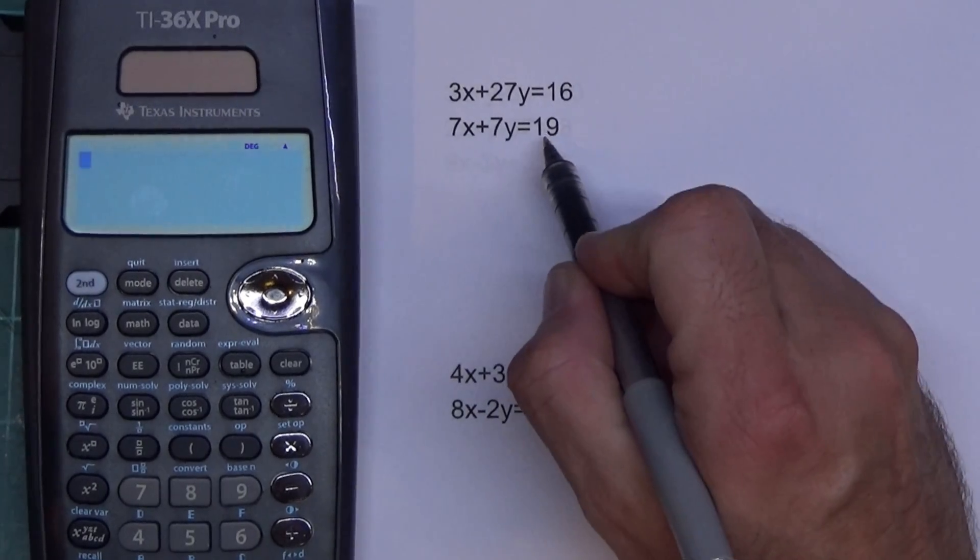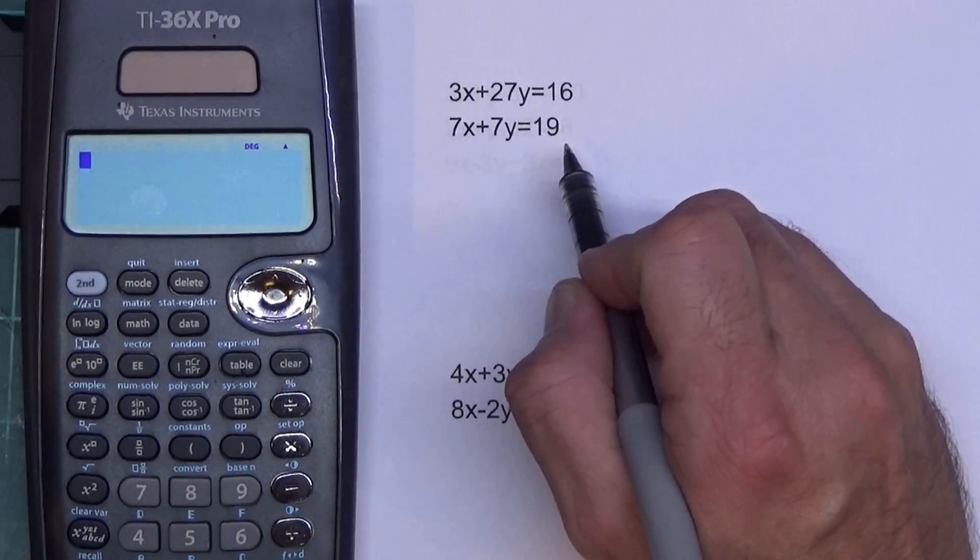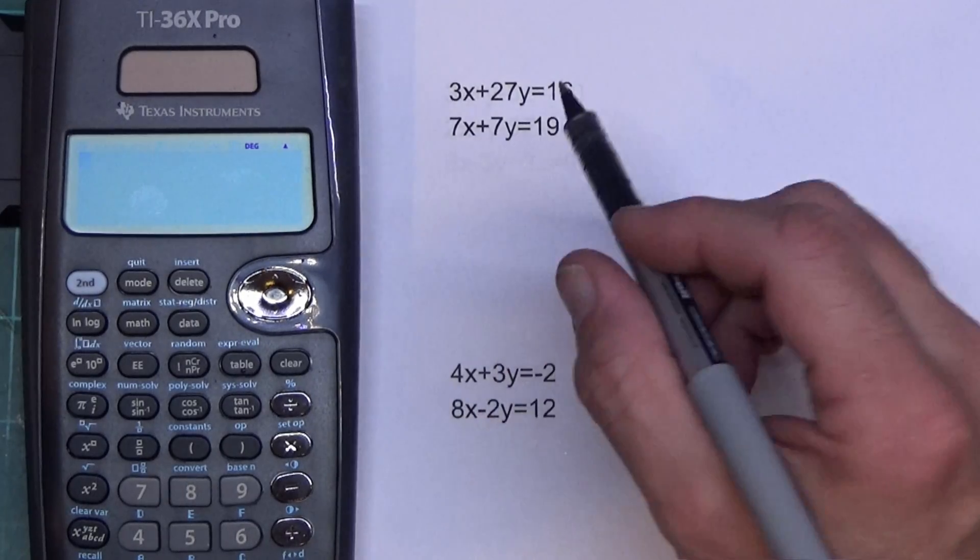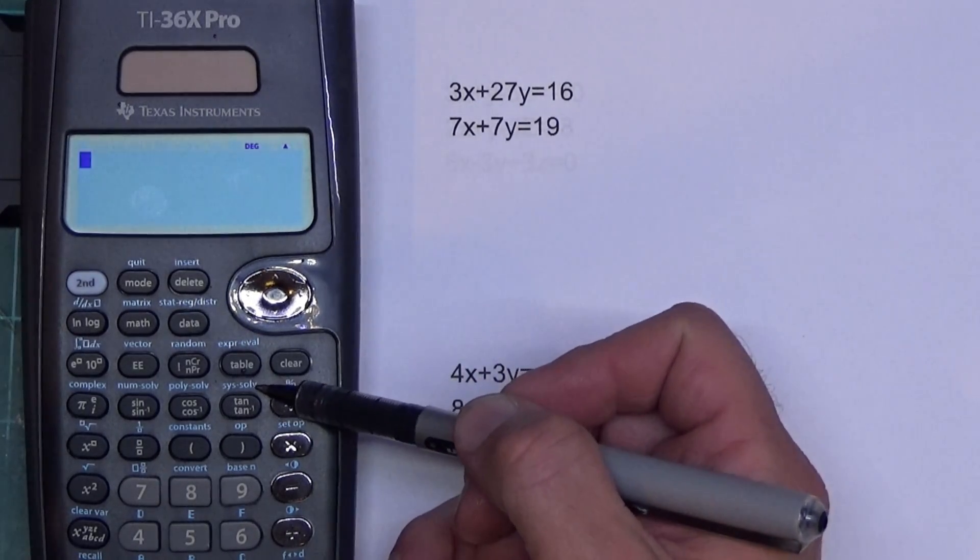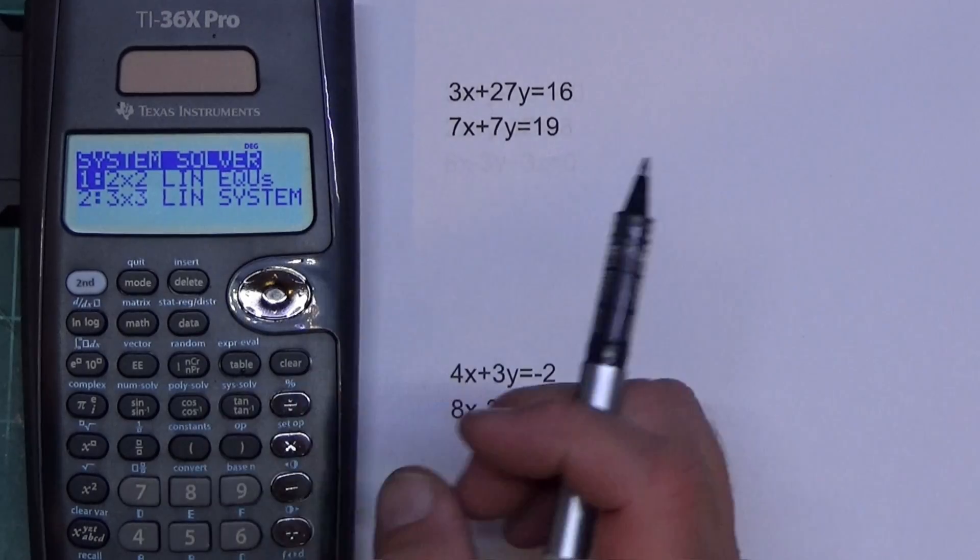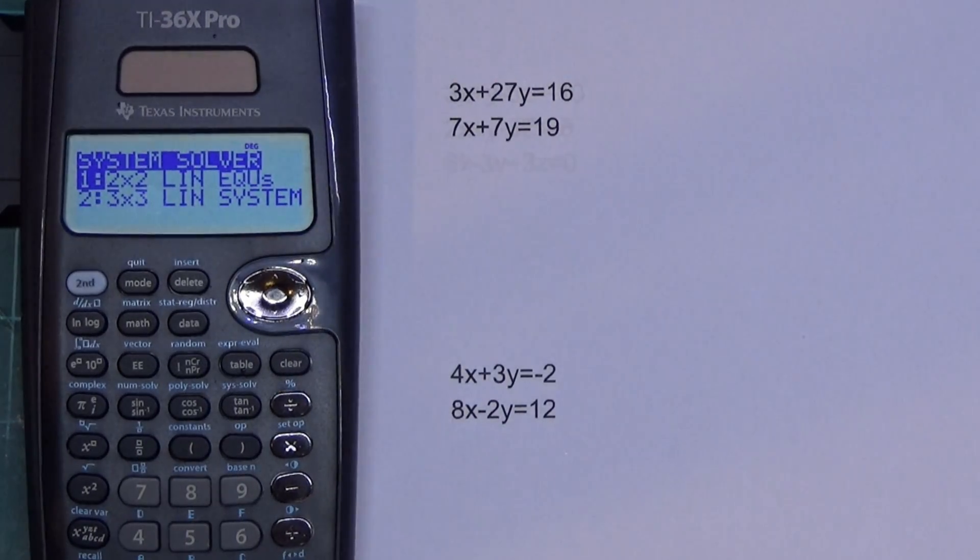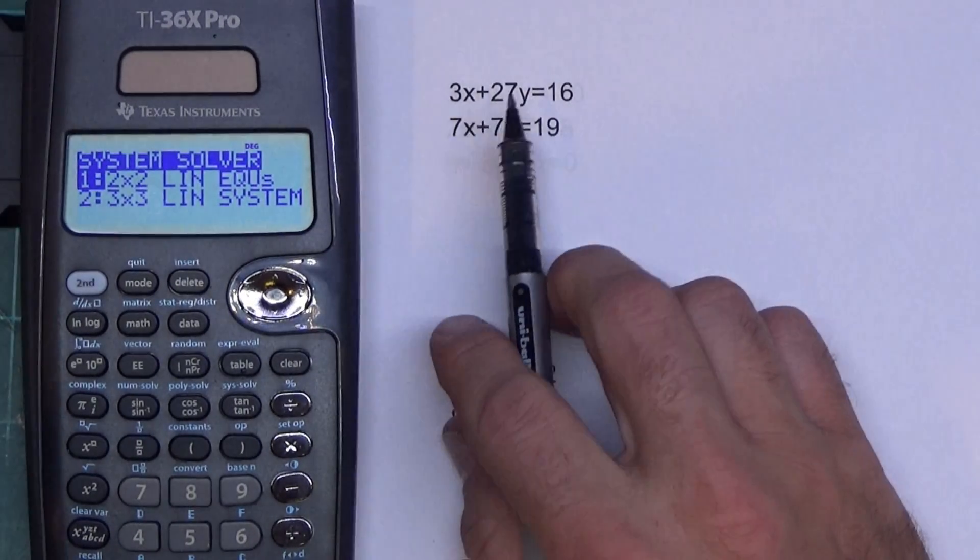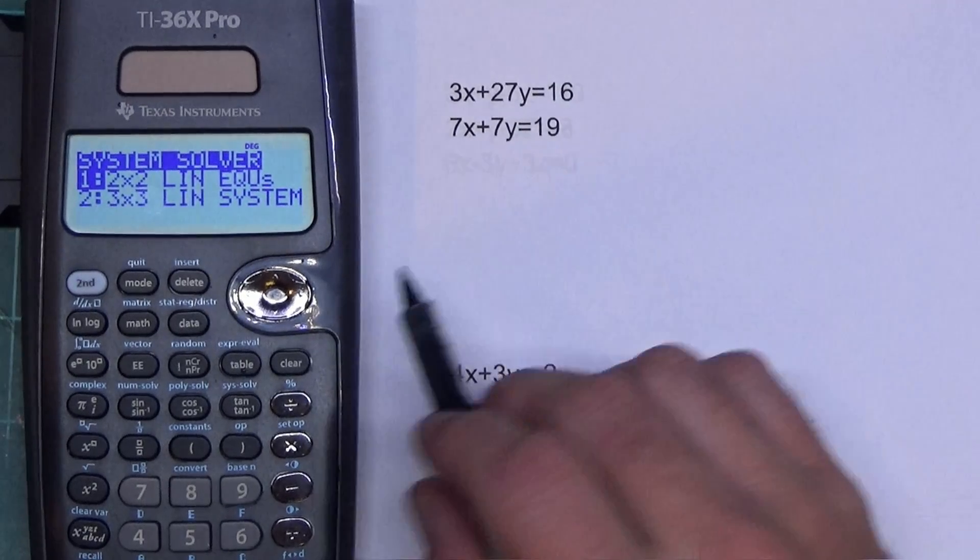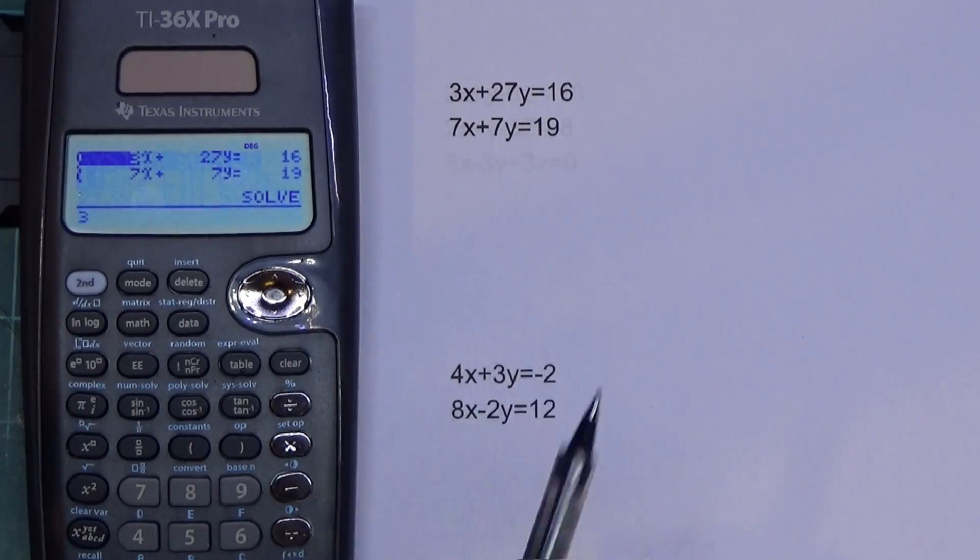Right now, we want to solve this guy right here. So what we're going to do to solve it is we've got to find it in the calculator. It says system solve right here. So we're going to set second tangent, and it gives me the system solver. There's two variables, X and Y, and there's two equations. So I want the two by two. So I press enter on that.